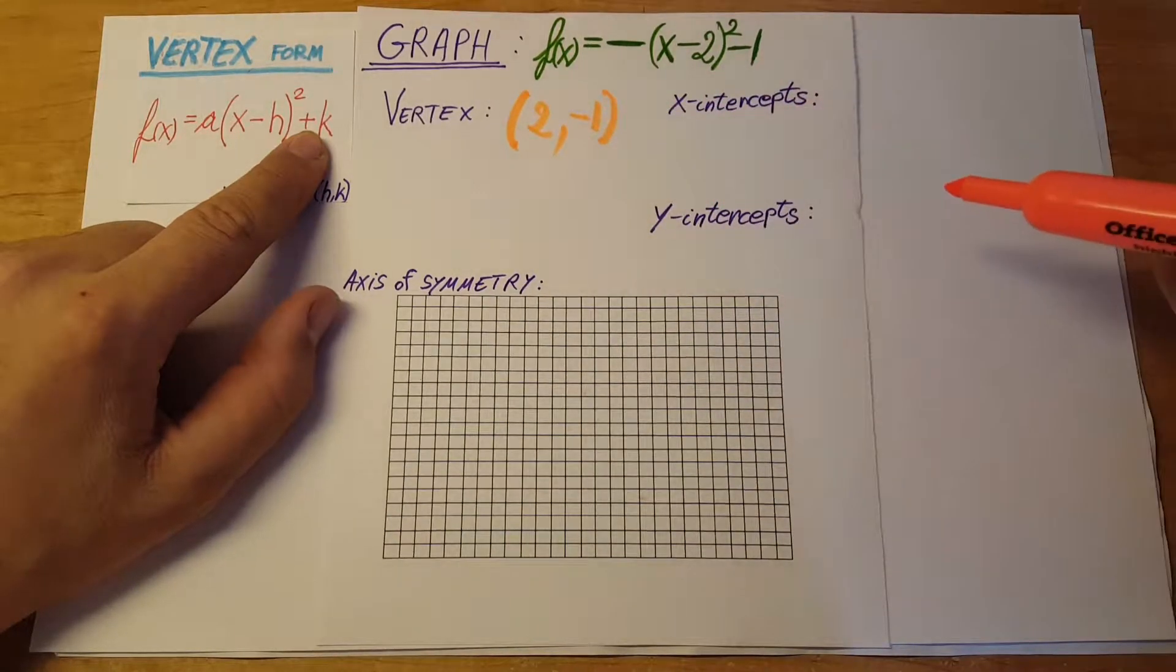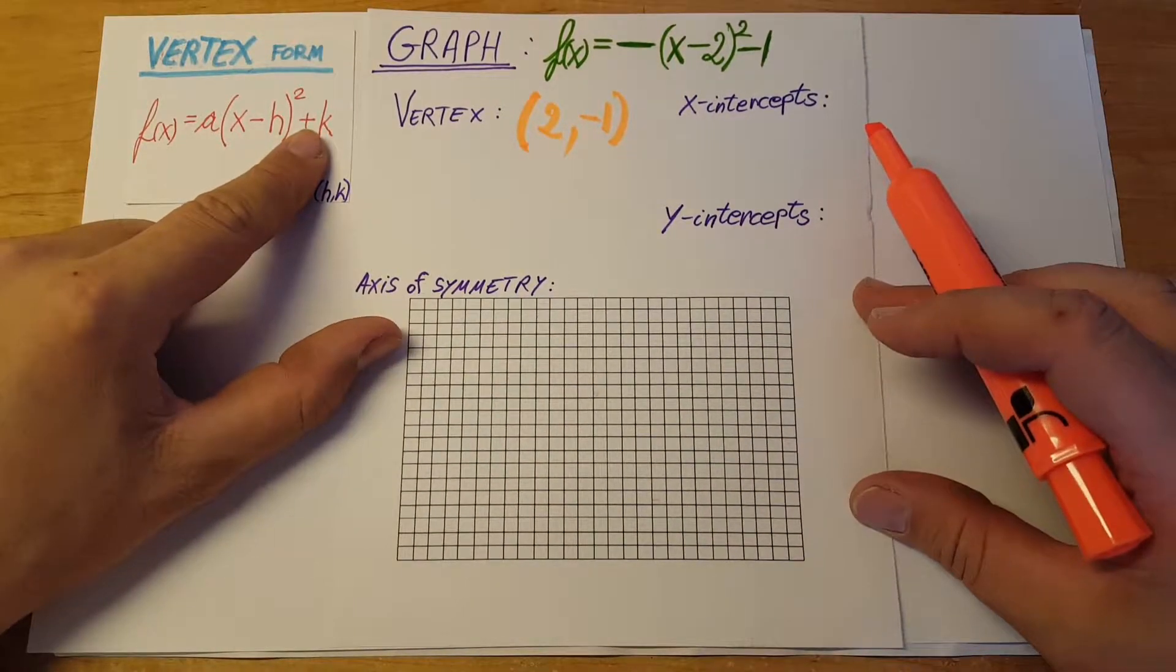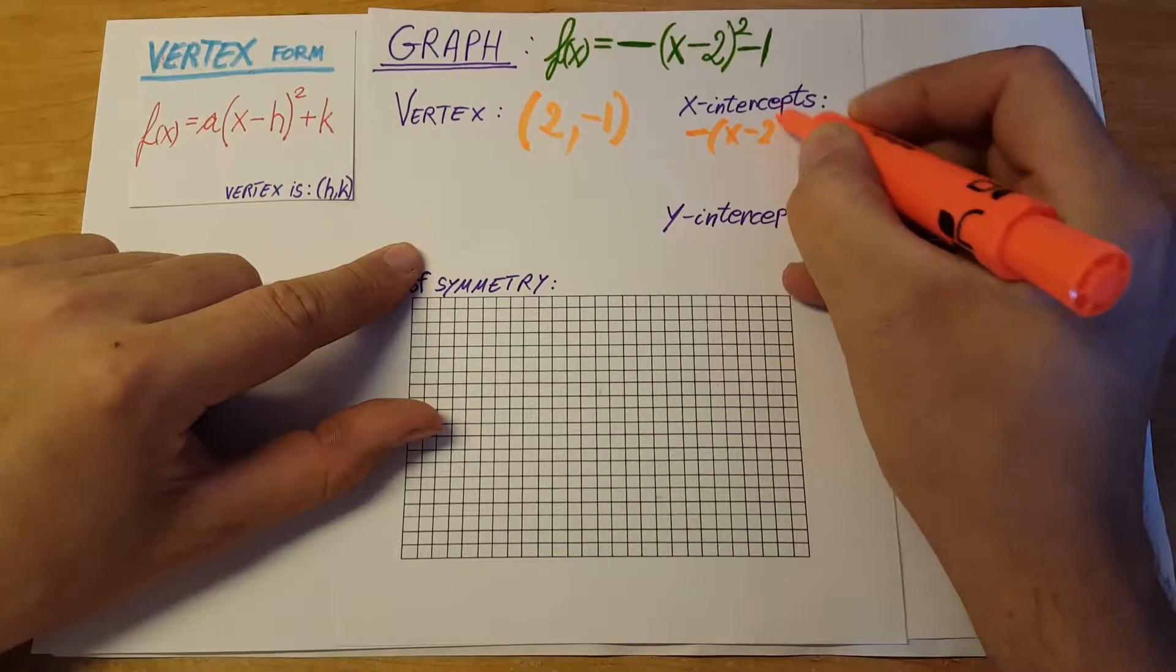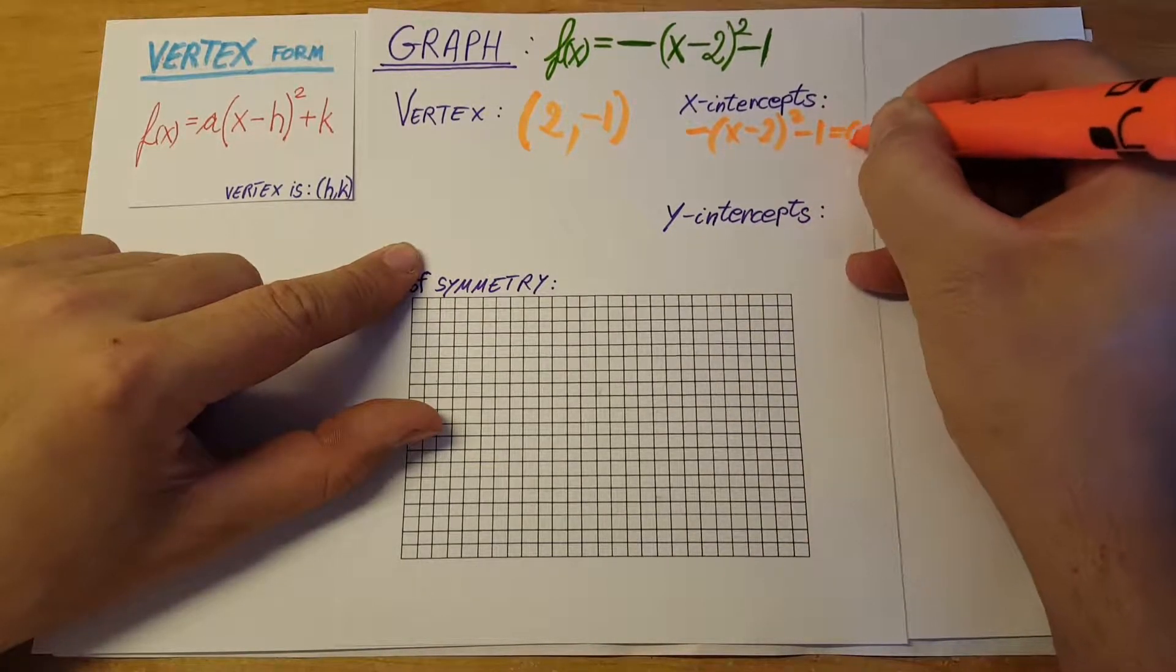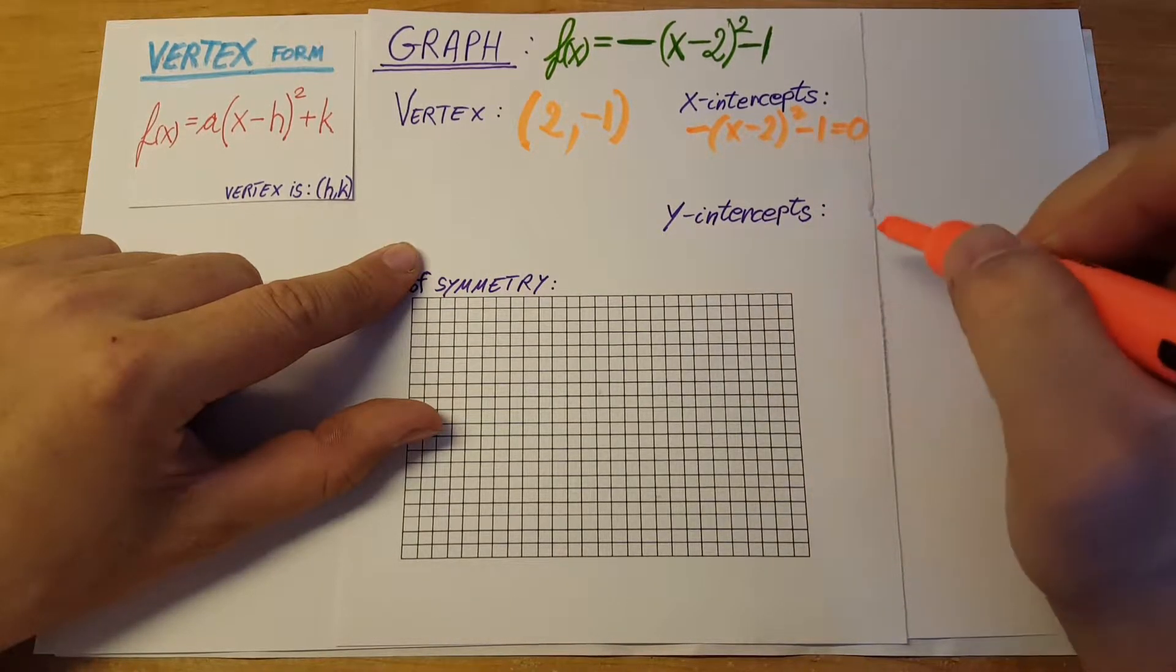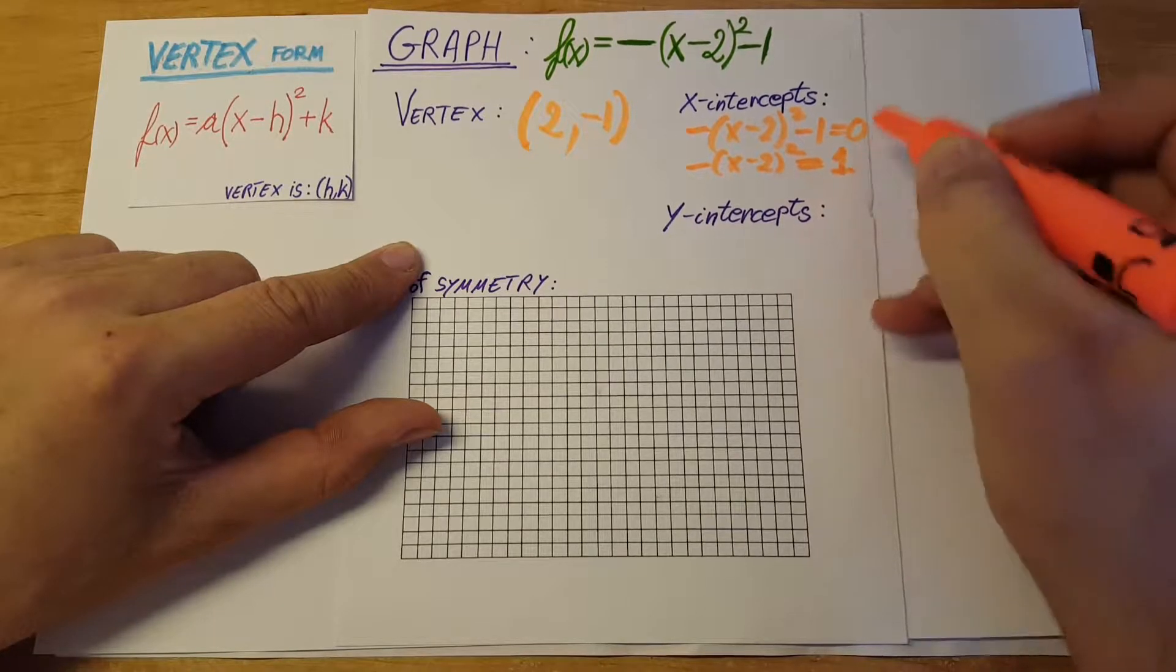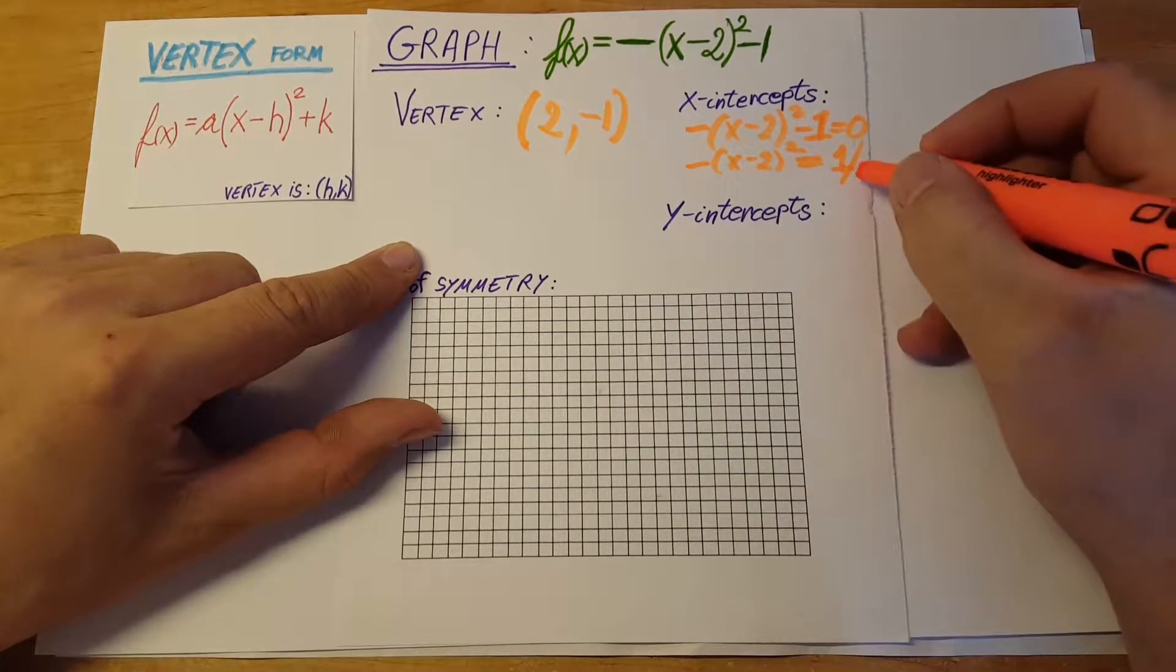Now let's look at the x-intercepts. We're going to set this whole thing equal to 0: -(x - 2)² - 1 = 0. We'll move the 1 to the other side: -(x - 2)² = 1. Now we'll multiply by negative 1.